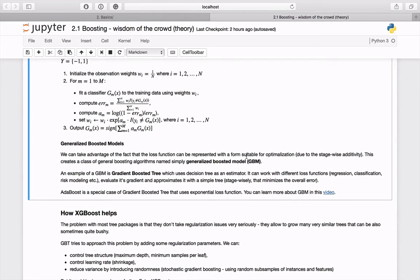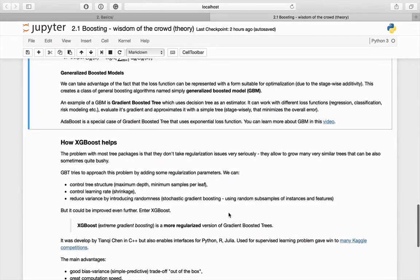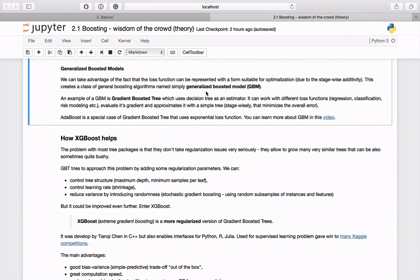This creates a class of general boosting algorithms named simply GBM, generalized boosted models. A popular implementation of GBM is gradient boosted tree. It uses decision tree as an estimator and can work with different loss functions, solving various problems such as regression, classification, risk modeling.